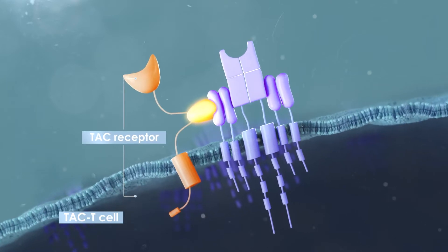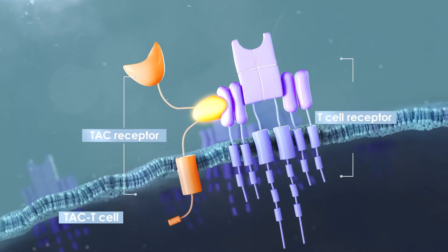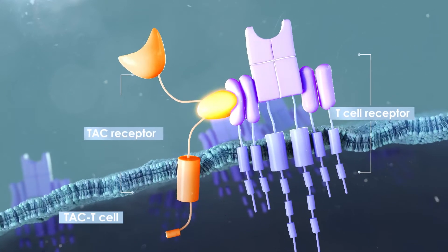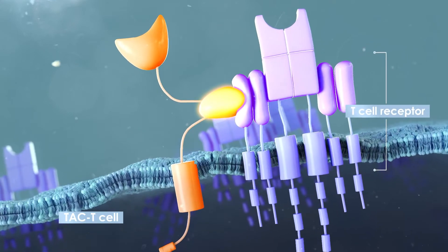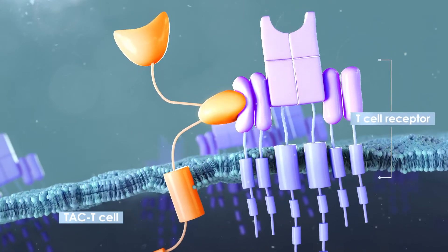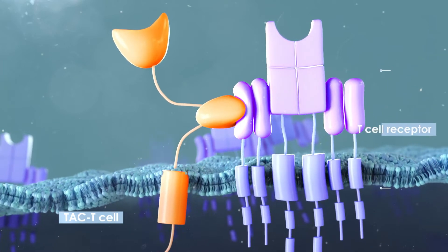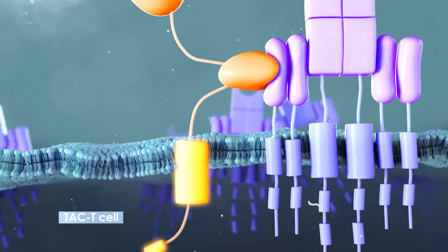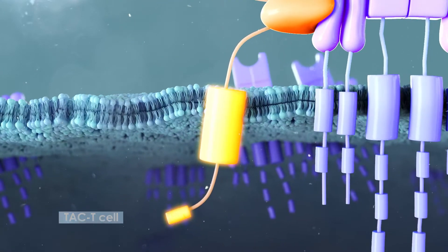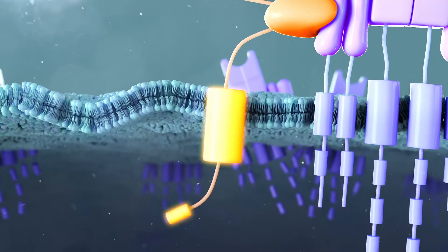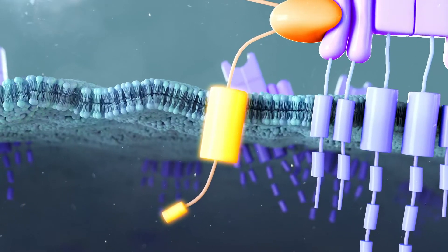The TAC molecule lacks signaling domains, but its central SCFV domain interacts with and co-opts the T-cell receptor, TCR, naturally expressed on T-cells. The TAC molecule is anchored to the cell membrane by its co-receptor domain, which includes important functional intracellular domains.